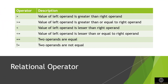Relational operators: in computer science, a relational operator is a programming language construct or operator that tests or defines some kind of relation between two entities. In languages such as C, relational operators return the integers 0 or 1, where 0 stands for false and any non-zero value stands for true.